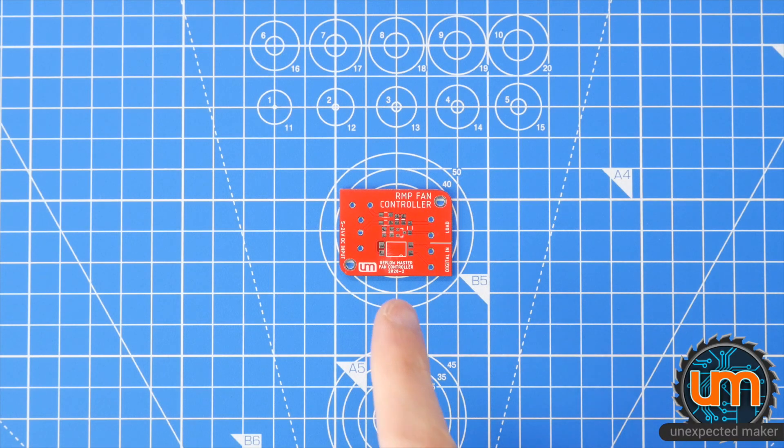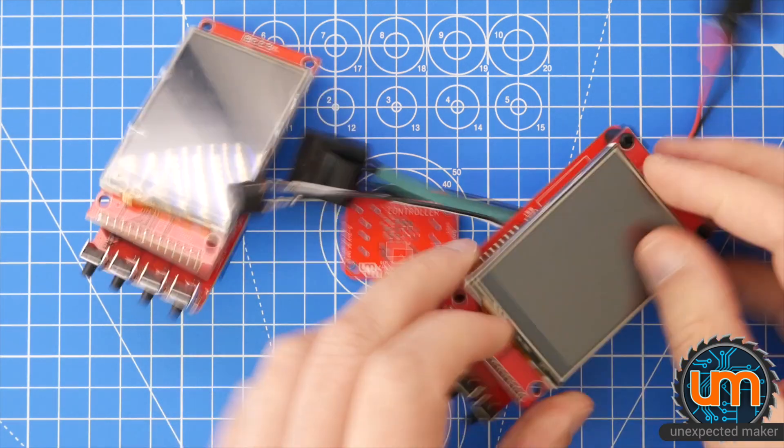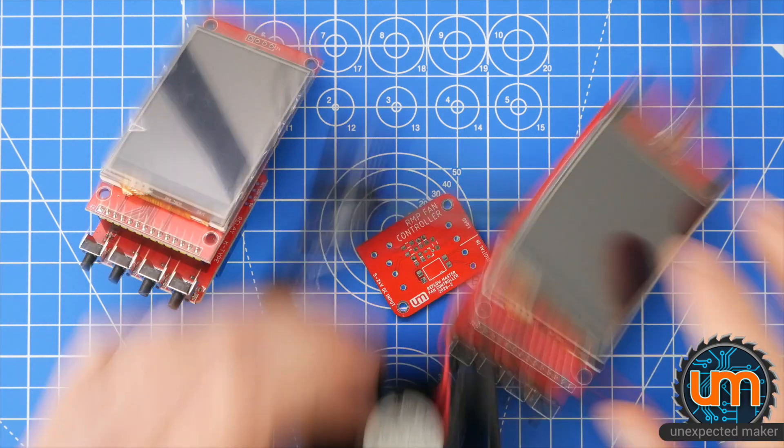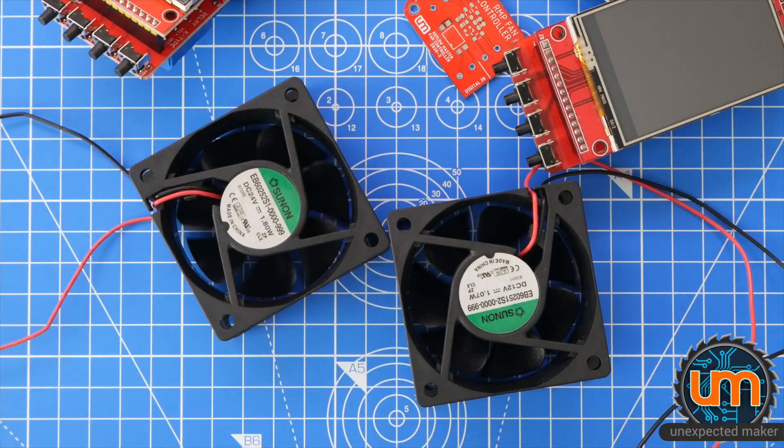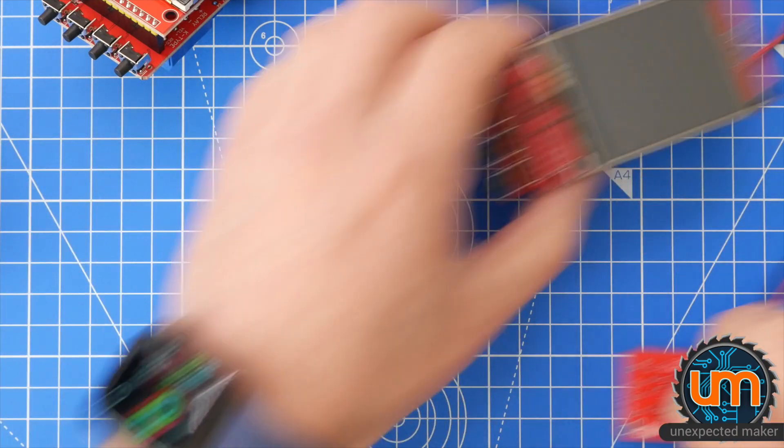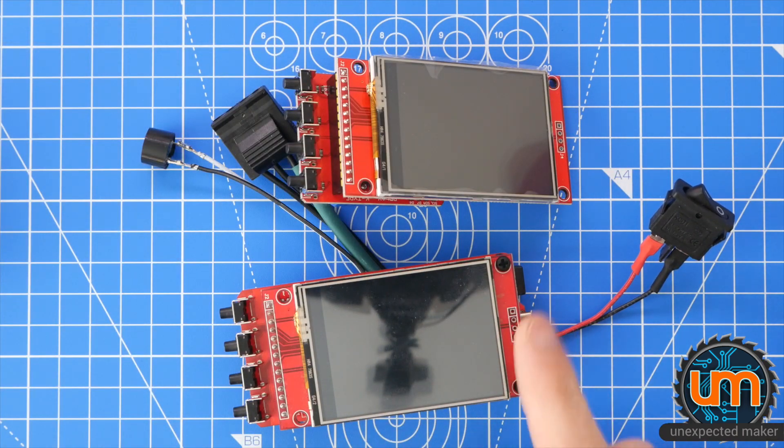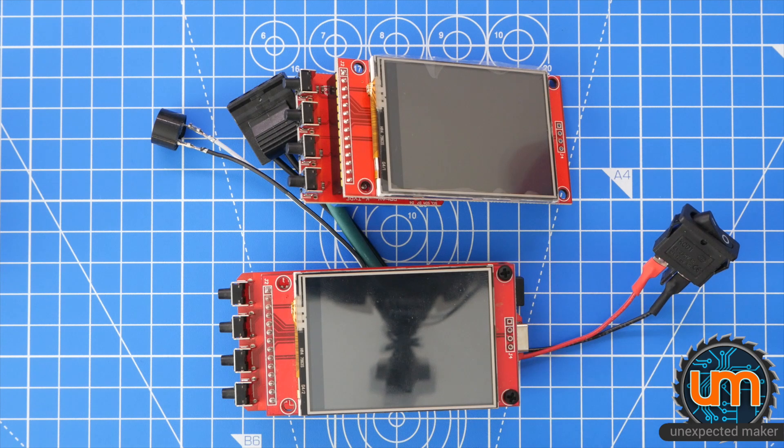It's basically an opto-isolated MOSFET power switch that's designed to work with a Reflow Master or Reflow Master Pro and control a fan or multiple fans at different voltages. One of the challenges with my Reflow Master and Reflow Master Pro is that they're designed to run 5V fans or to control something at 5V. That's great if you've got a 5V DC fan that you want to control, which I have been doing with my toaster oven.